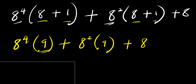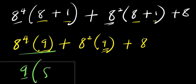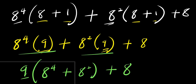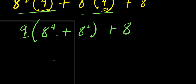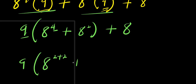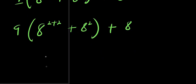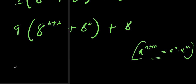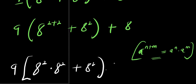Since there is a factor of 9 in both terms, I factor it out. Using the rule a^(n+n) = a^n times a^n, we get: 9 times (8^2 times 8^2 + 8^2) + 8. Then factoring 8^2 from those terms: 9 times 8^2 times (8^2 + 1) + 8.